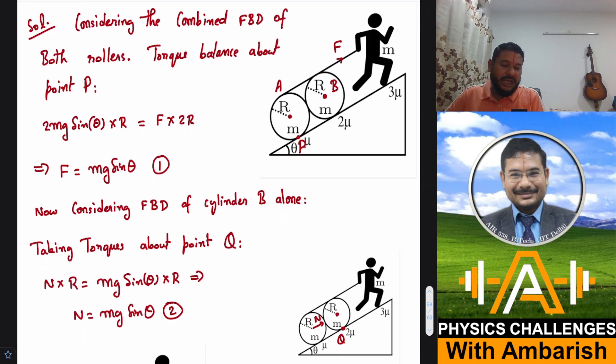I'm considering the combined free body diagram of these two rollers. Let's say this tension is F. What's the torque of F about point P? This torque is F into 2R. This must be balanced by mg sin θ and mg sin θ, that makes 2mg sin θ into R. That straightaway gives me the minimum required force for pulling upwards must be mg sin θ. So that's equation 1.